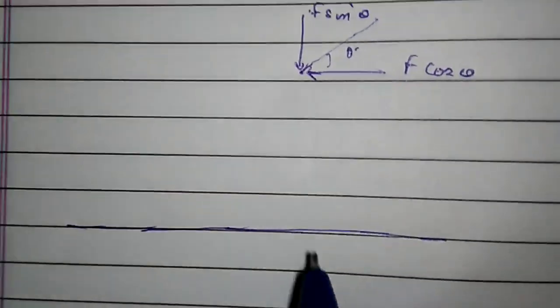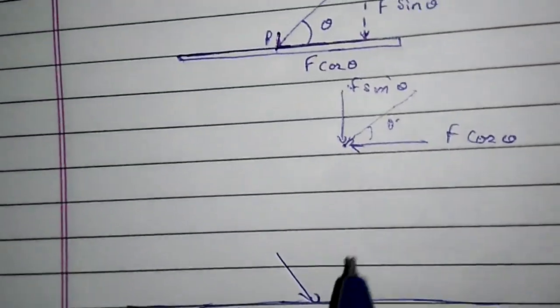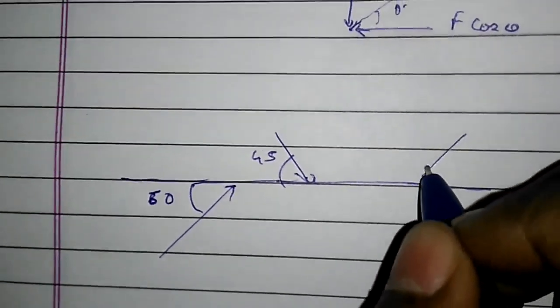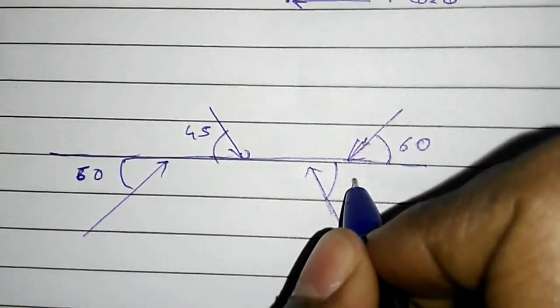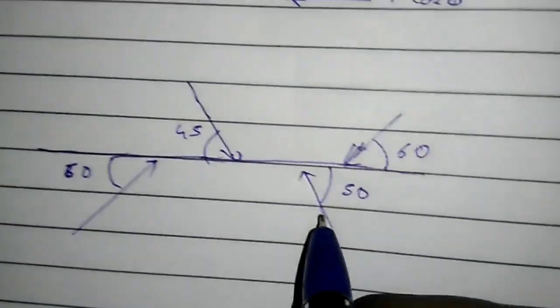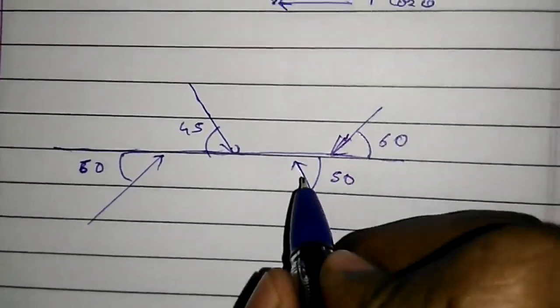In complicated problems, when there are many forces acting on a single body, we usually find out what is the net force acting in the vertical direction and the net force acting in the horizontal direction. Let us take an example where this angle is 60, one more force at 45, another at 60, and another at 50. Notice that all the angles should be with respect to the horizontal.